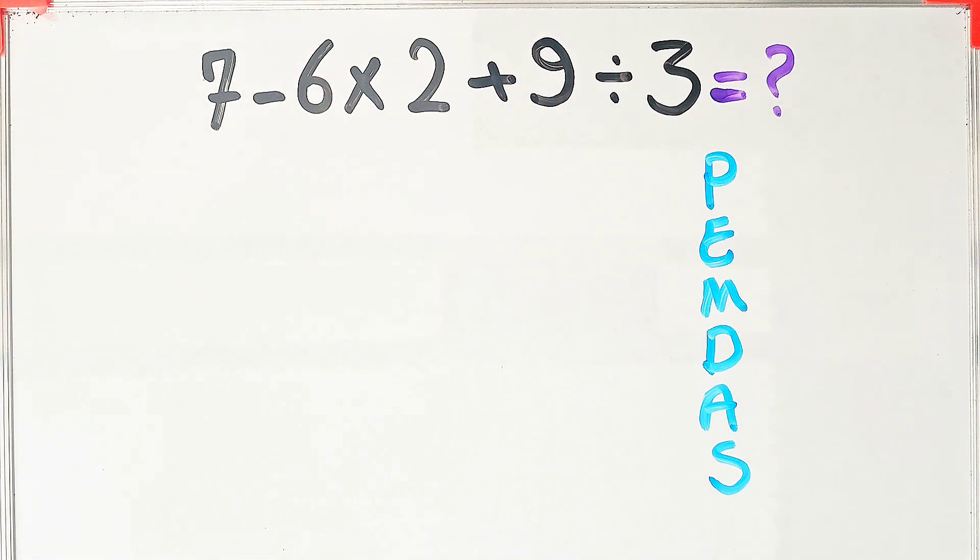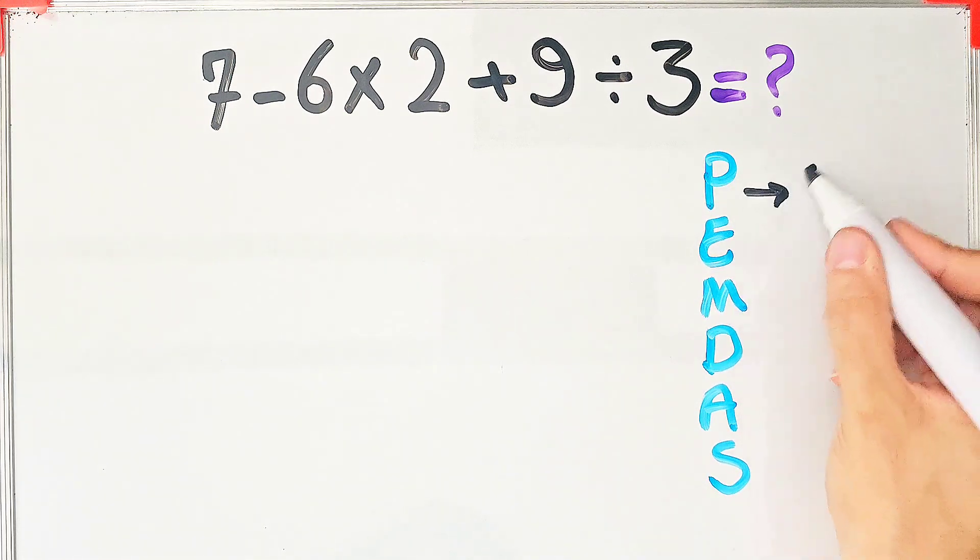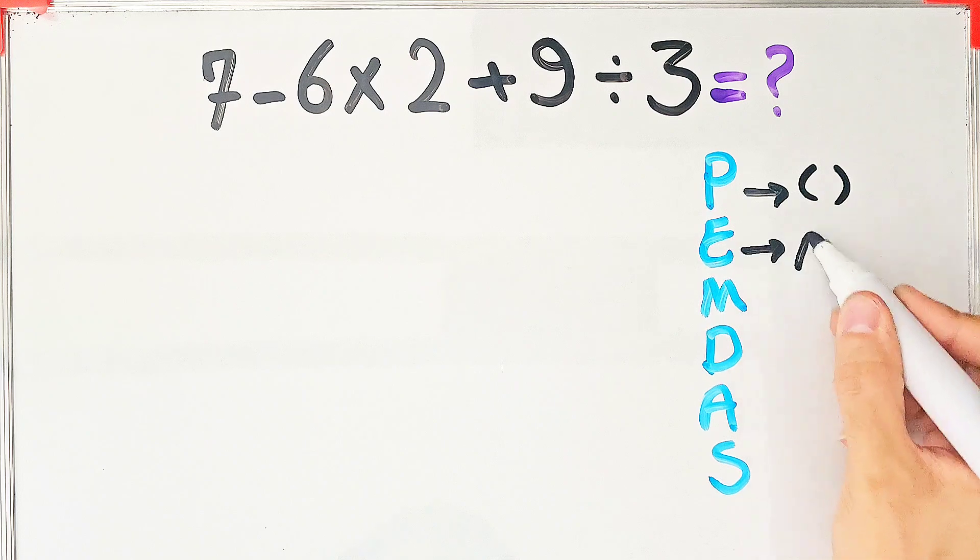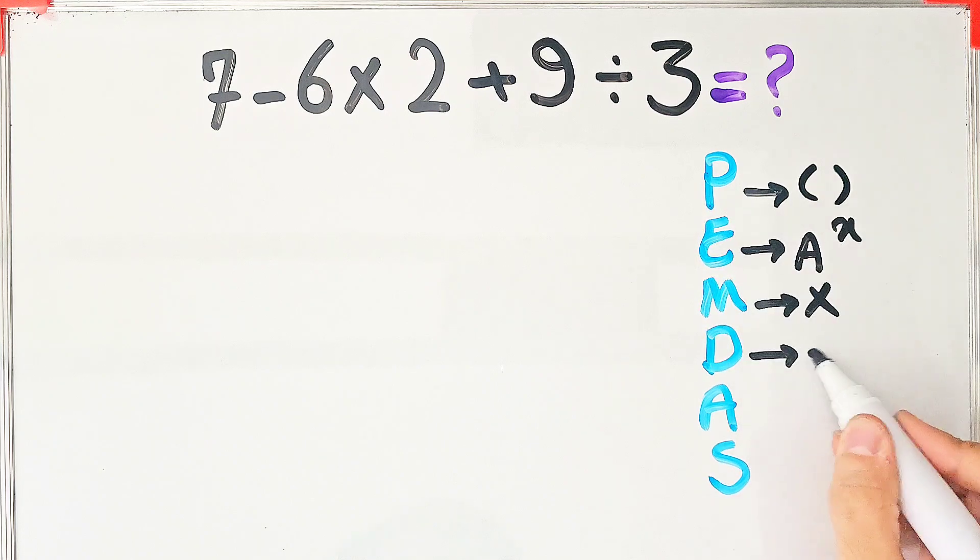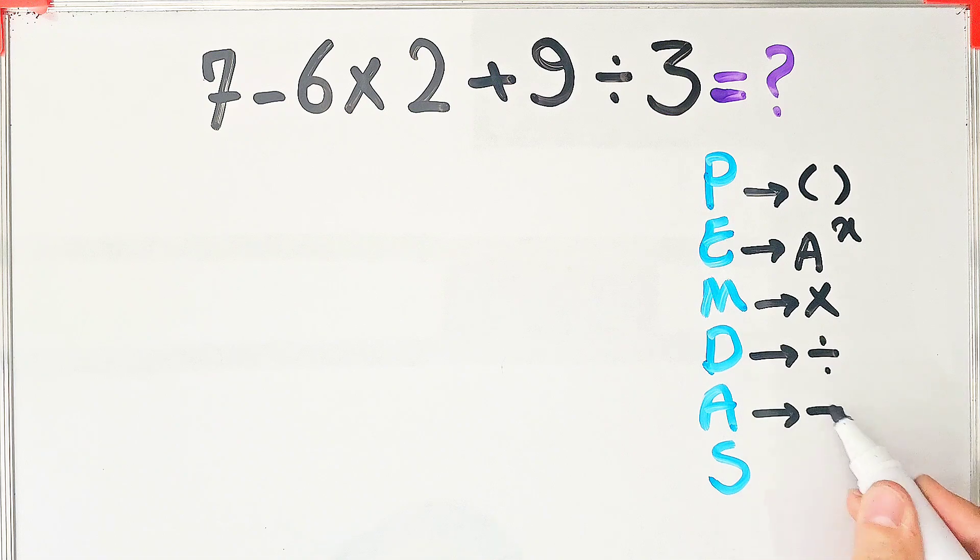In this rule, P stands for parentheses, E stands for exponent, M stands for multiplication, D stands for division, A stands for addition, and S stands for subtraction.